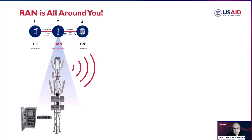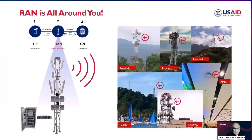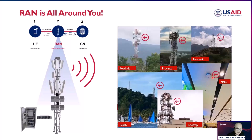Next time you're out and about, take a look around you. You'll likely see cell towers and antennas on top of buildings, along the side of the road, in the mountains, or even inside malls. The type of antennas inside malls are called in-building solutions. Some people mistake them for Wi-Fi access points, but they are not. They are omnidirectional antennas or active antennas that belong to a Radio Access Network.